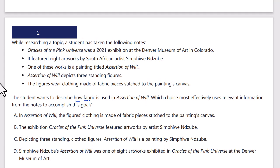The student wants to describe how fabric is used in 'Assertion of Will.' So the method — how it's used — is the key. 'Oracles of Pink Universe' is a 2021 exhibition that featured artworks; one was a painting called 'Assertion of Will.' It depicts three standing figures wearing clothing made of fabric pieces stretched to the painting's canvas — so the canvas itself is the clothing. Answer A states the figures' clothing is made of fabric pieces stitched to the painting's canvas — that seems correct.